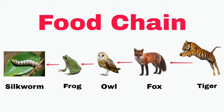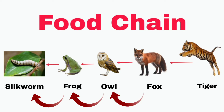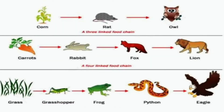Let's have another example of a food chain: silkworm, frog, owl, fox and tiger. Frog eats silkworm, owl eats frog, fox eats owl, and tiger eats fox. In nature there are many food chains, and all living things are dependent on each other to get their food. So these are some examples of food chains.